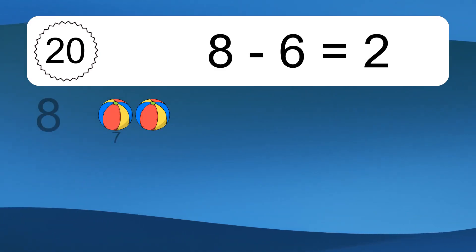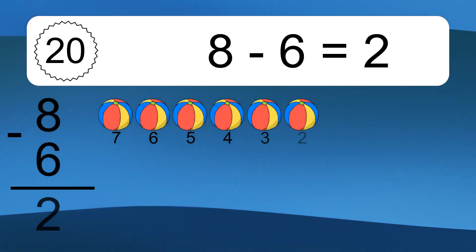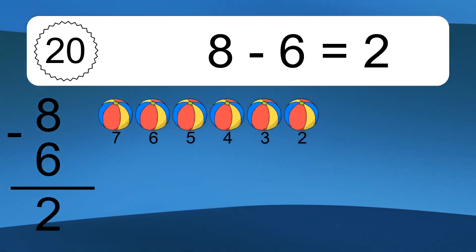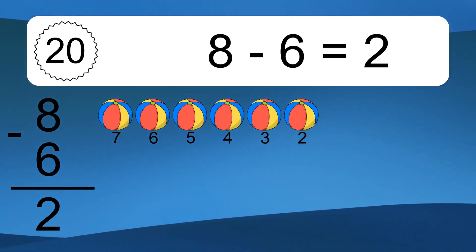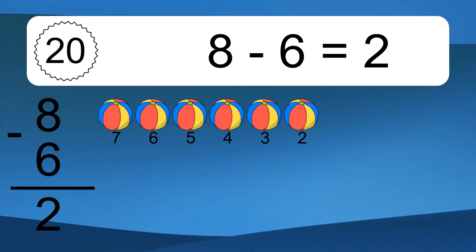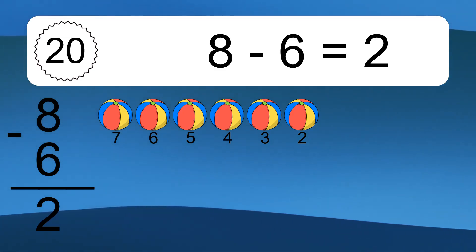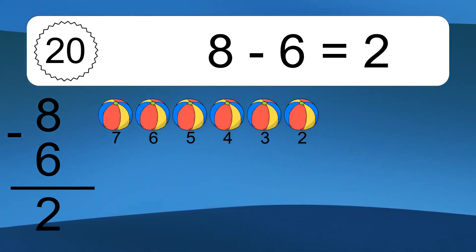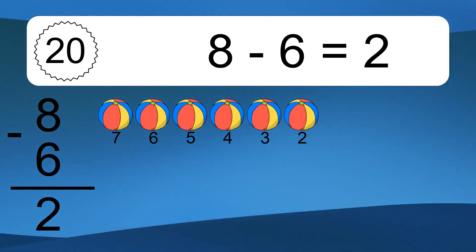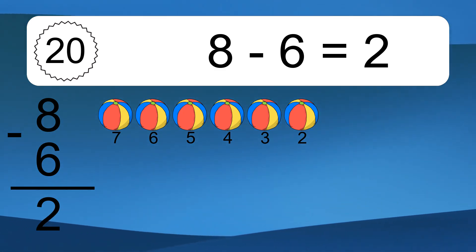8 minus 6 equals what? 8 minus 6 equals 2. Let's count it: 7, 6, 5, 4, 3, 2.